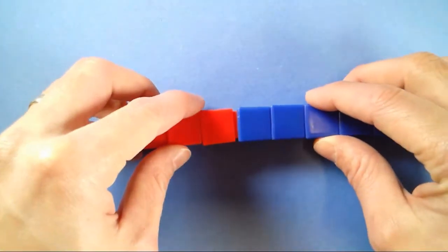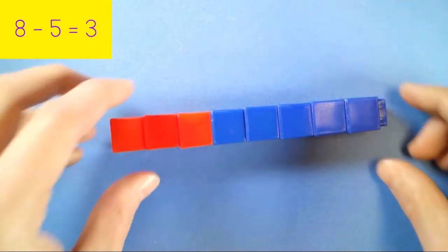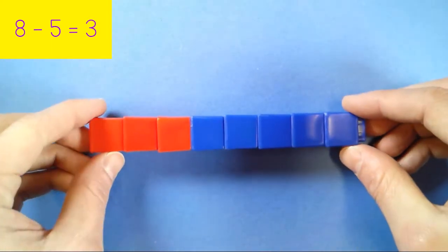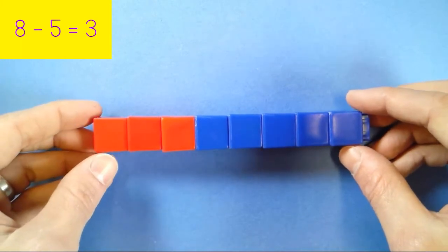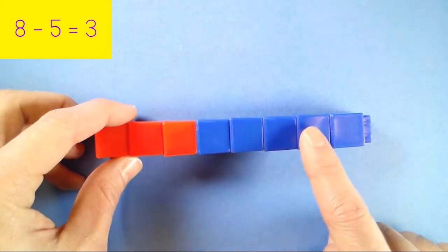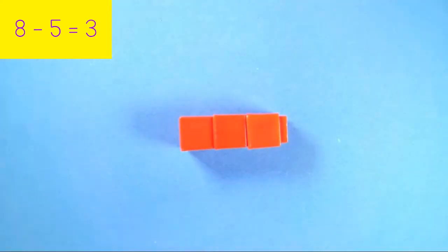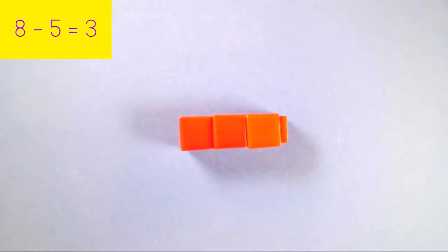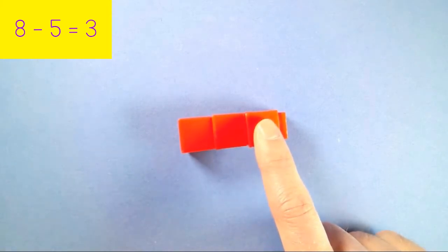And let's try the last subtraction sentence. Dino thinks 8 minus 5 equals 3. Let's find out. Again, start with your connecting cubes altogether in a bar of 8. And now, subtract 5. Here's 5 blue. 1, 2, 3, 4, 5 will be subtracted from 8. How many connecting cubes are you left with? 1, 2, 3. 8 minus 5 equals 3.